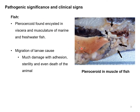In fish, this parasite also produces some pathology and clinical findings. The plerocercoid is encysted in the viscera and musculature of freshwater fishes, and due to the migration of these larval stages it may produce damage in the musculature, and sometimes sterility and even death of the fish.